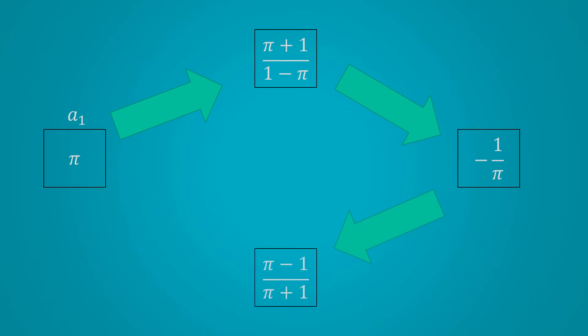When solving problems, always keep your eyes open. Don't forget that we started off with A1 equal to pi. By writing down A2 to A5, we've discovered that the sequence is actually periodic and repeats every 4 terms.